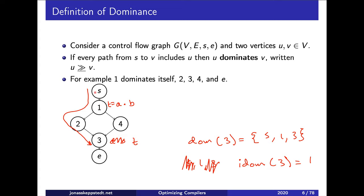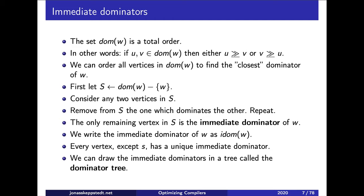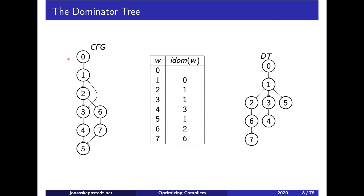The immediate dominator is unique for each node except for the start node s, which has no immediate dominator. Given that the immediate dominator is unique, we can create a dominator tree from the control flow graph by writing the idom of each node.